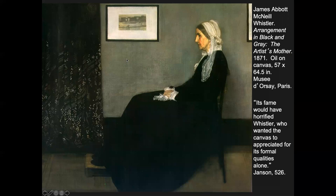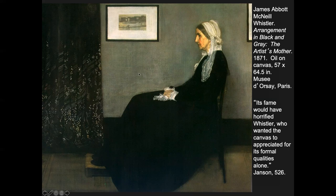This is the work you're probably familiar with. Most people call it Whistler's Mother, and it is of his mother, who still lived in the United States. According to Janson, its fame would have horrified Whistler, who wanted the canvas to be appreciated for its formal qualities alone. You might know it as Whistler's Mother, but it's called Arrangement in Black and Gray. He saw things like Japanese prints and thought it was interesting that you don't really need the actual subject of the picture — it's more a design on the canvas. He liked the way a big swath of black and a swath of gray balanced everything.